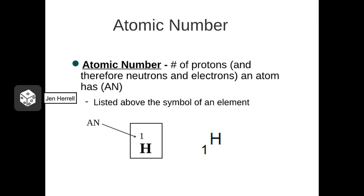The number of protons a particular element has is represented by the atomic number listed next to the atomic symbol. You'll find the atomic number listed above the symbol, or sometimes as a subscript to the left of the atomic symbol. For hydrogen, this number tells you it has one proton. For many of the small atoms we'll work with, you can assume the number of protons, neutrons, and electrons are the same — unless there's some symbol present telling you otherwise. Hydrogen is an exception: it has one proton, no neutron, and one electron. The atomic number really just refers to the protons.